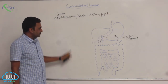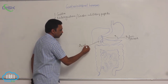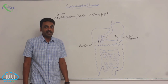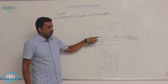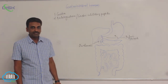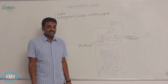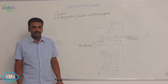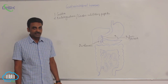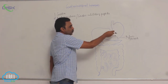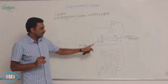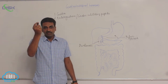Enterogastron is also called gastric inhibitory peptide. It is produced from the wall of the duodenum. Whenever there are lipids in the food entering into the duodenum, that will stimulate the production of enterogastron. Enterogastron reduces gastric acidity — it reduces the HCl produced by the gastric glands. Gastrointestinal motility, meaning the movement of food through the stomach and intestine, is also inhibited with the help of enterogastron.